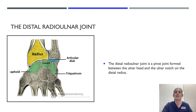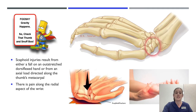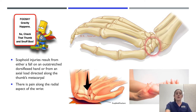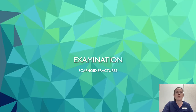The distal radioulnar joint is a pivot joint formed between the ulnar head and the ulnar notch of the distal radius. On history, thinking about scaphoid fracture: scaphoid injuries result from either a fall on an outstretched, dorsiflexed hand, or from an axial load directed along the thumb's metacarpal, and there is pain along the radial aspect of the wrist.